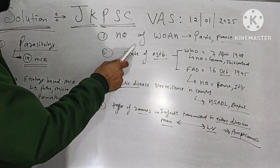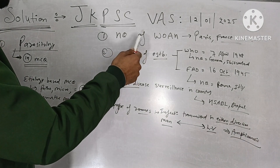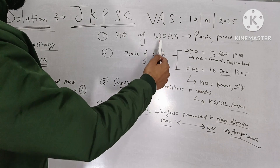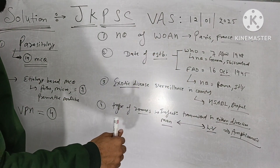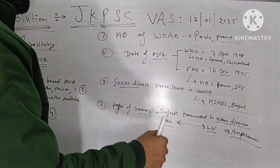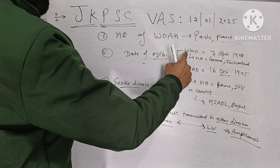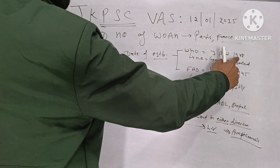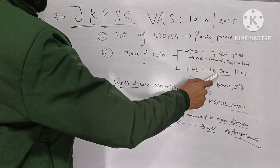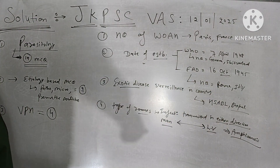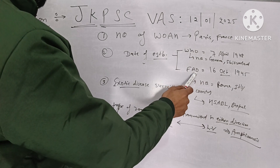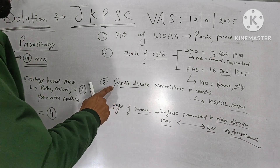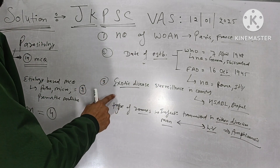Two MCQs were on headquarters and dates of establishment. The headquarters of WOAH — World Organisation for Animal Health — is Paris, France. The WHO was established on 7th April 1948 and FAO on 16th October 1945. FAO headquarters is Rome, Italy and WHO is Geneva, Switzerland.